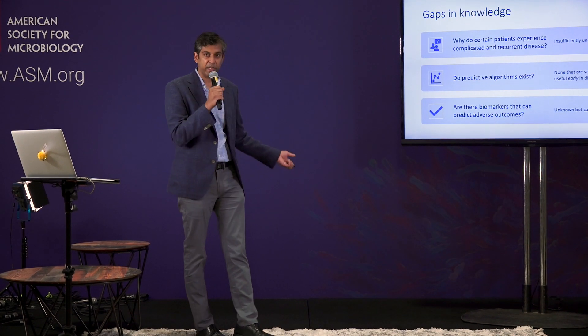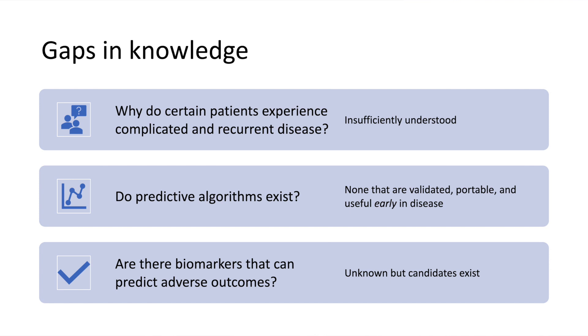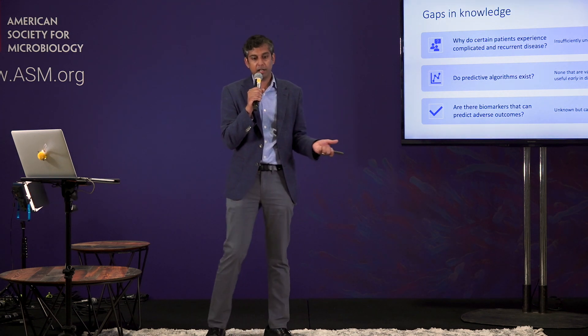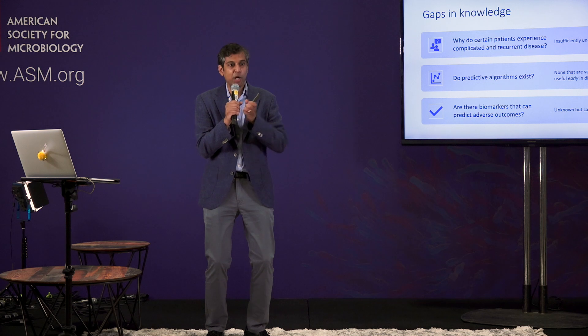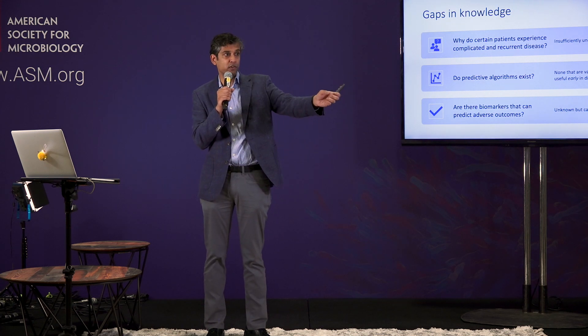Despite knowing all that, there are gaps in our knowledge. We don't know why certain patients experience complicated or recurrent disease — that's insufficiently understood, largely because the clinical risk factors don't help us as much. Who gets recurrences and more severe courses? It's older adults, people with immunocompromising conditions or other comorbidities, and those with ongoing antimicrobial exposure. But those are also the same factors that led to them getting C. difficile in the first place, so it doesn't really help us differentiate who's heading toward recovery versus adverse outcomes. We also don't know if biomarkers can be helpful in this setting.